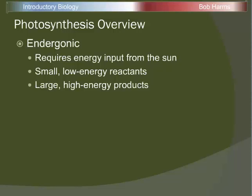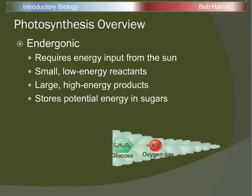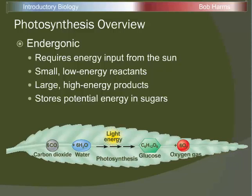We're going to try to harness solar energy into those products and store it up so that it's available for the plant when it needs it. Looking at our summary reaction: carbon dioxide and water are two low-energy reactants. The whole series of reactions is driven by light energy. Those carbon dioxides are bound together to make glucose — our sugar and energy-containing chemical — and oxygen gas is given off as a waste byproduct of photosynthesis.